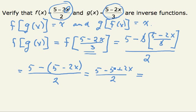5 minus 5 is 0, so I have 2x divided by 2, which is x. So f of g of x is in fact x.